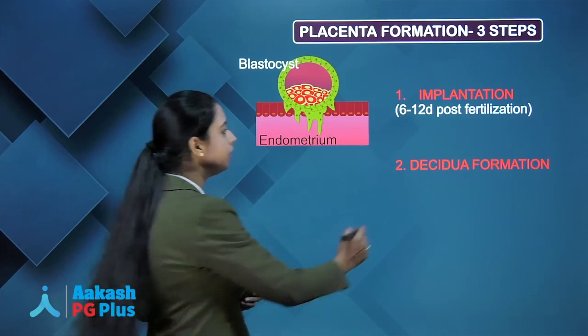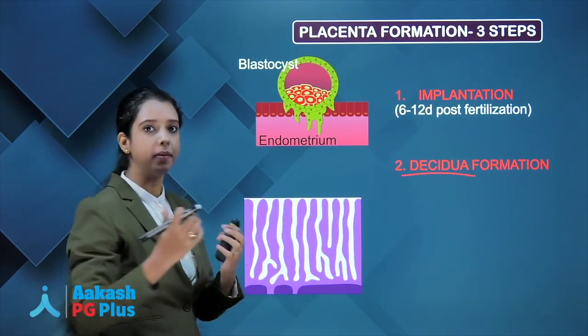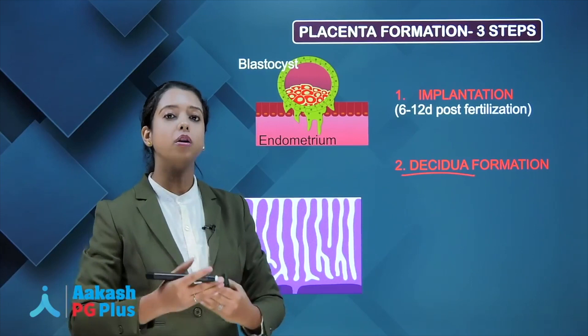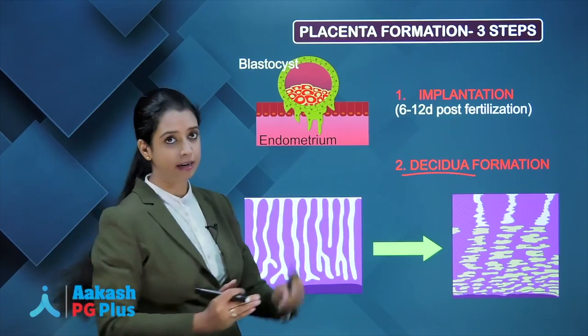After implantation — in fact, along with implantation — step 2 also occurs, which is decidua formation. Decidua is nothing but the pregnant endometrium; endometrium in a pregnant lady is called as decidua. The endometrium has to prepare itself for the upcoming blastocyst. Because of high levels of hCG and high levels of progesterone, the stromal cells become hypertrophied and are filled with glycogen and lipid. This decidua is now ready for implantation — this is called decidua formation.